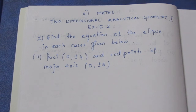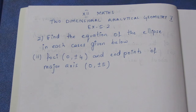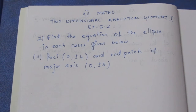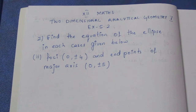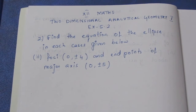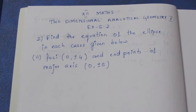For the second sum, the foci are given as (0, ±4) and the end points of the major axis are given as (0, ±5).